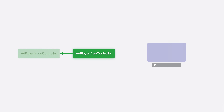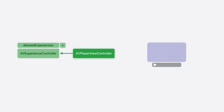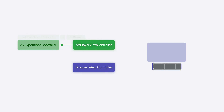AVPlayerViewController has a new counterpart: AVExperienceController. This controller defines the set of possible video playback experiences that its parent PlayerViewController can switch between. Example experiences are Embedded, where the video appears alongside other app content, or Expanded, where the video screen appears alone. Each AVExperienceController can specify its own set of allowed experiences. Adding MultiView as an allowed experience enables a MultiView button in the corresponding PlayerViewController's UI. When a person taps that button, the ExperienceController transitions to a MultiView experience, and a Content Selection Browser appears, indicating the start of that experience.